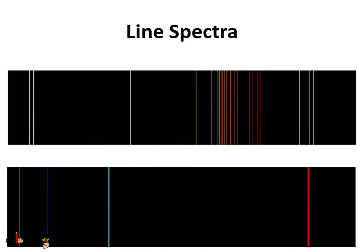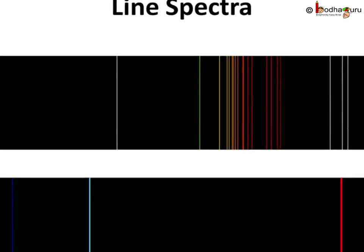Line spectrum is unique for every element. An electron always tries to maintain minimum energy state, which is called the ground state. Hence, an electron releases the absorbed energy in the form of electromagnetic energy, which causes emission lines in the line spectrum. These line spectra unveiled many secrets of atomic structure and indicated that the circular orbit concept of Bohr was quite faulty.